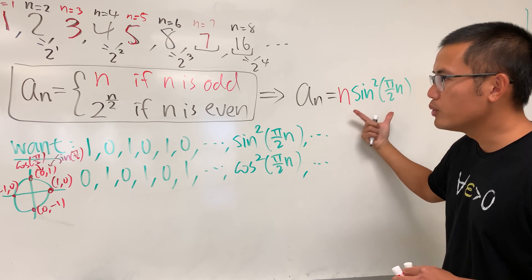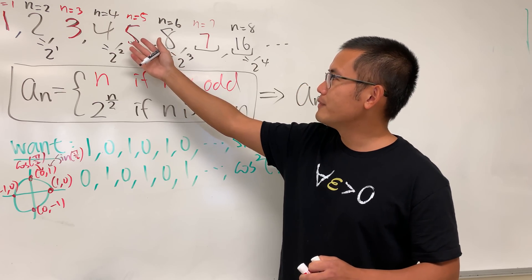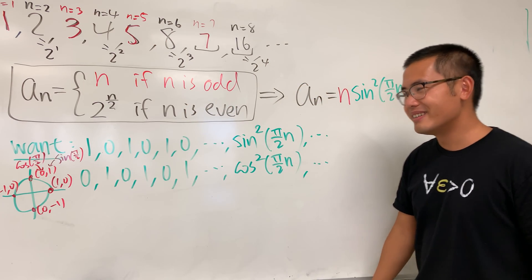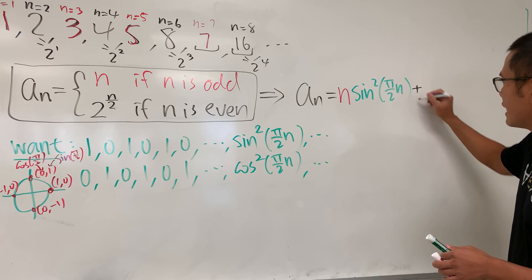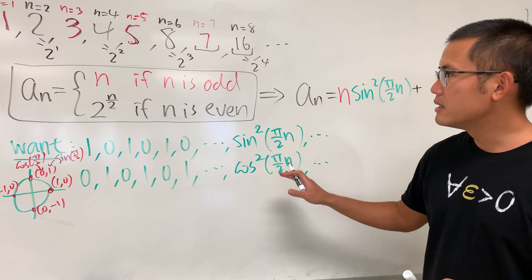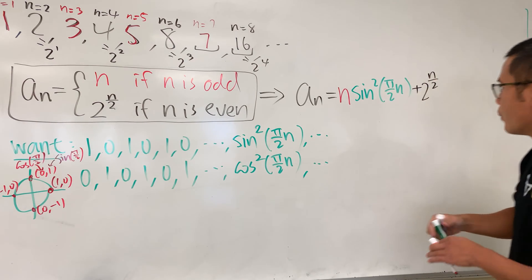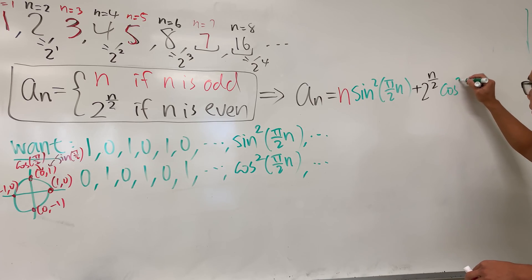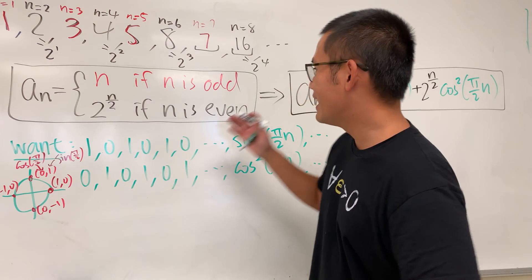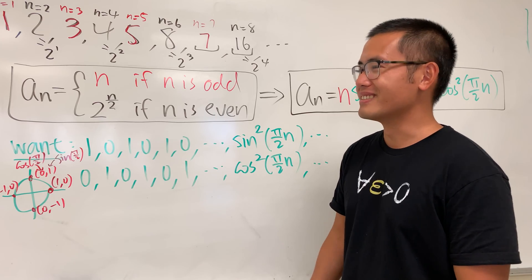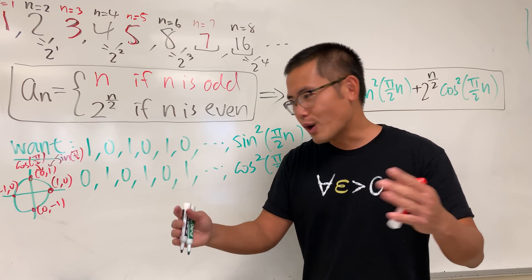The combined formula is: aₙ = n · sin²(πn/2) + 2^(n/2) · cos²(πn/2). The first term produces 1, 0, 3, 0, 5, 0, 7, 0 — the odd terms. The second term produces 0, 2, 0, 4, 0, 8 — the even terms. Adding them together gives the full sequence. This is one of my favorite sequence questions — let me know if you have questions or other fun sequence questions in the comments. That's it!